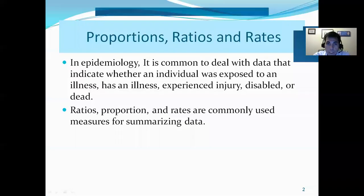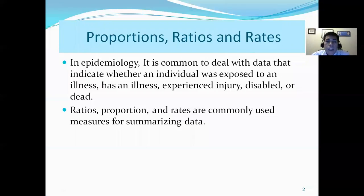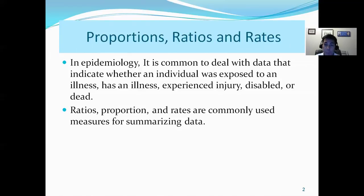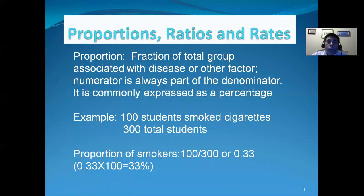Let's begin with proportion, ratios, and rates. In epidemiology, it is common to deal with data that indicate whether an individual was exposed to an illness, has an illness, experienced injury, became disabled, or died. Ratios, proportions, and rates are commonly used measures for summarizing data that pertains to epidemiological studies.